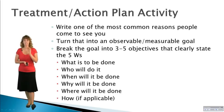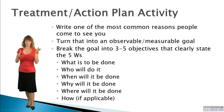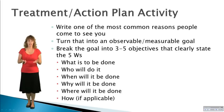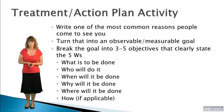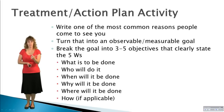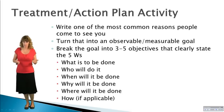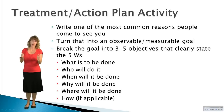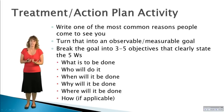Write down some of the most common reasons people come to see you as a therapist — marital problems, problems at work, being angry all the time. Practice turning those into observable, measurable goals. Break each goal into three to five objectives that clearly state the W's: what's to be done, who will do it, when, why — remember, it's got to be meaningful — and where will it be done, and how if applicable. Pretend you're the client so you know what your temperament and preferences are. This gives you practice making these positive goals.